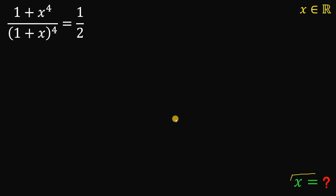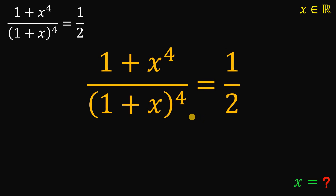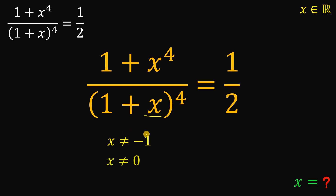To answer this kind of question, let's get the equation and observe something. First, x cannot be equal to negative 1. Otherwise, if x is negative 1, then 1 plus negative 1 becomes 0, so the denominator is 0 and we don't want that. Also, x is not equal to 0 — if x is 0, the left-hand side is just 1, and 1 is not equal to one half. So x is not equal to negative 1 and x is not equal to 0.